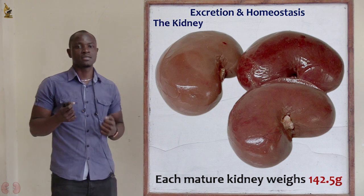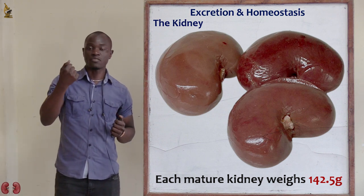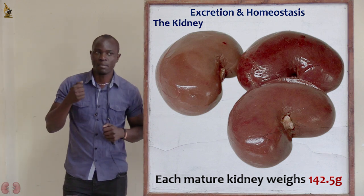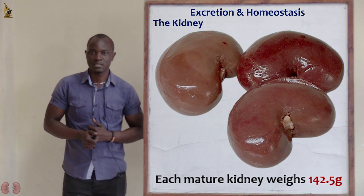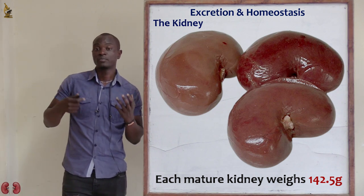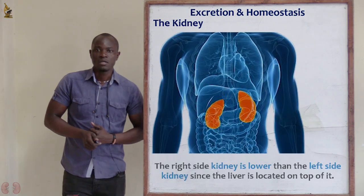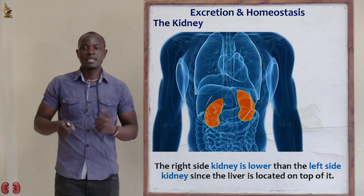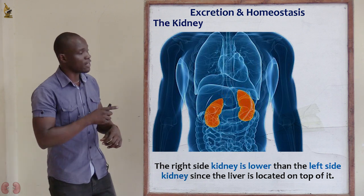That is about the size of a clenched fist — approximately 142.5 grams. Also, the right kidney is generally slightly lower than the left kidney, so the left kidney is slightly higher than the right kidney.